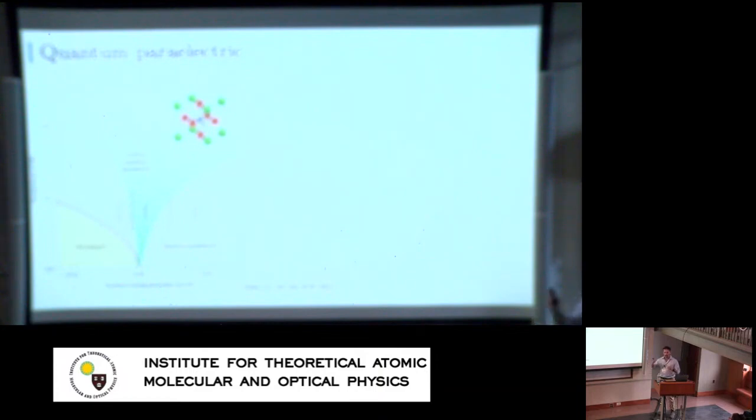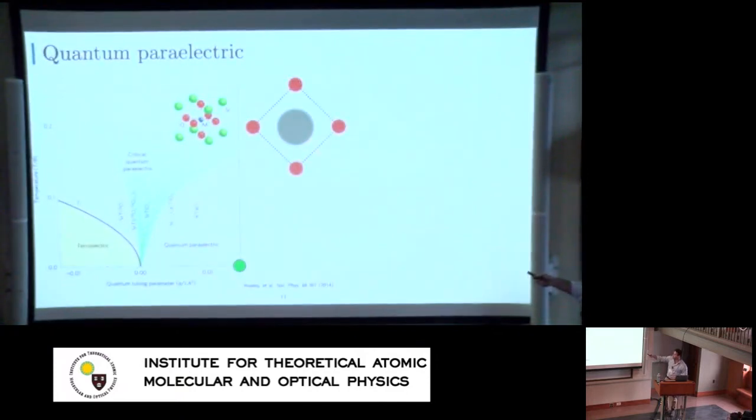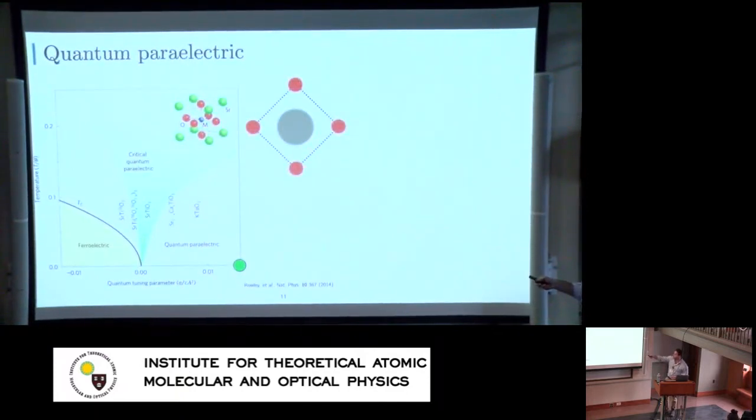So just as a paramagnet is magnetically susceptible but it's not magnetized, a paraelectric is electrically susceptible but not electrified. And intrinsically this strontium titanate is this quantum paraelectric, but it seems to be quite close to a critical point. So it's very mutable in some sense.